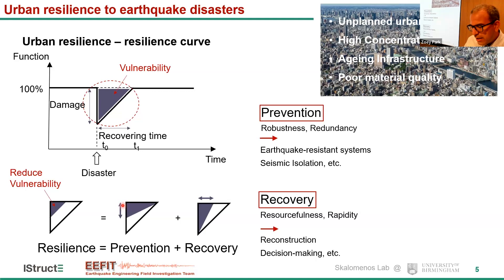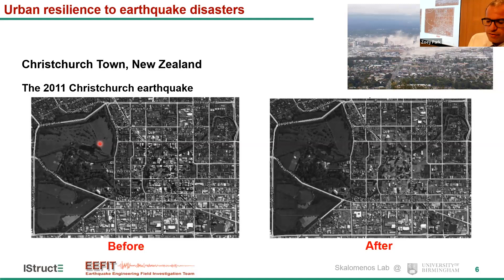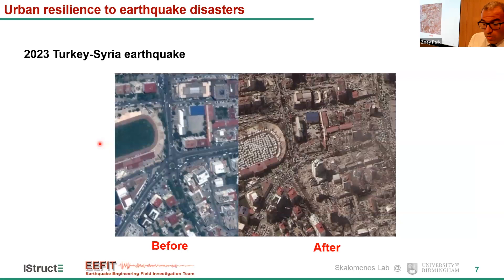Why is this important? We all remember the devastating earthquake events in Christchurch that completely changed the face of the city — many buildings were demolished and collapsed. Also, the recent event in Syria and Turkey saw many buildings collapse, making it very difficult to access areas where people were injured and required first aid.